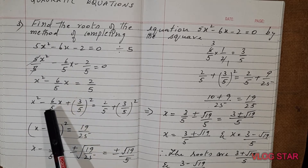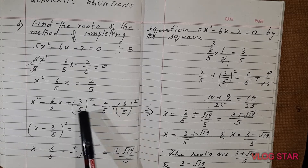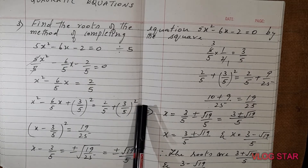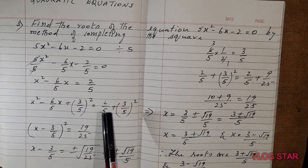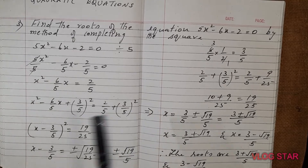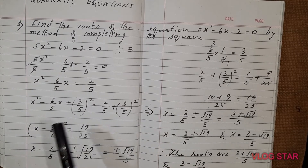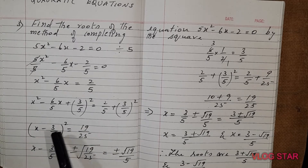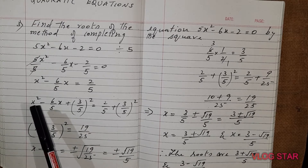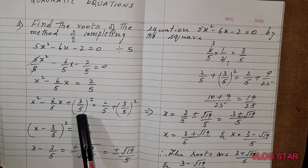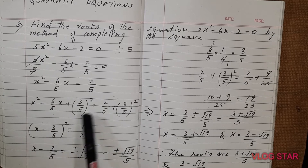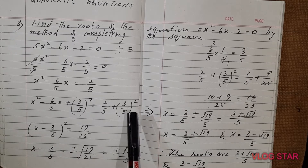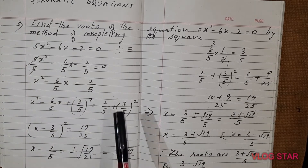Take the whole square of this and add to both sides of the equation. So x² - (6/5)x + (3/5)² added to both sides: (3/5)² on the left and (3/5)² plus 2/5 on the right. Now we can write the left side like (a - b)² = a² - 2ab + b², so instead of these three terms we can write x - 3/5 whole square.